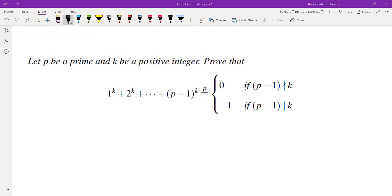For example, if p is 101, which is a prime, then the sum of 1^k all the way to 100^k is 0 if 100 does not divide k, and is -1 if 100 does divide k.